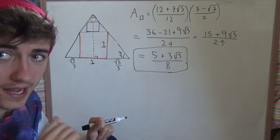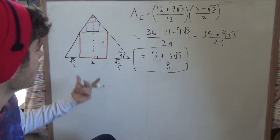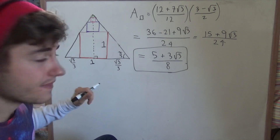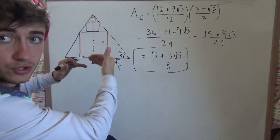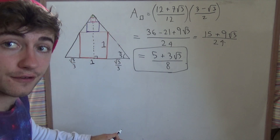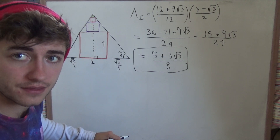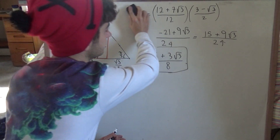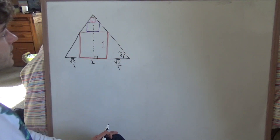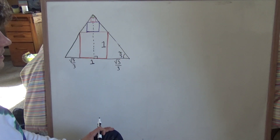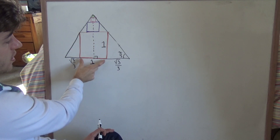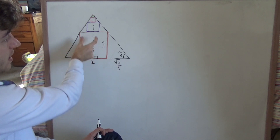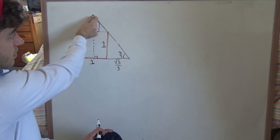Next we're going to do the geometric series way, because you might notice that each time we scale down from one trapezoid to the next, we're multiplying by the same number each time. That is causing it to scale the same way every single time we go from one trapezoid to the next smallest one. So we need to figure out what that scale factor is, and see that we're just adding powers of that together to get the final answer, which should evoke a geometric series. So let's derive that same answer using a geometric series.